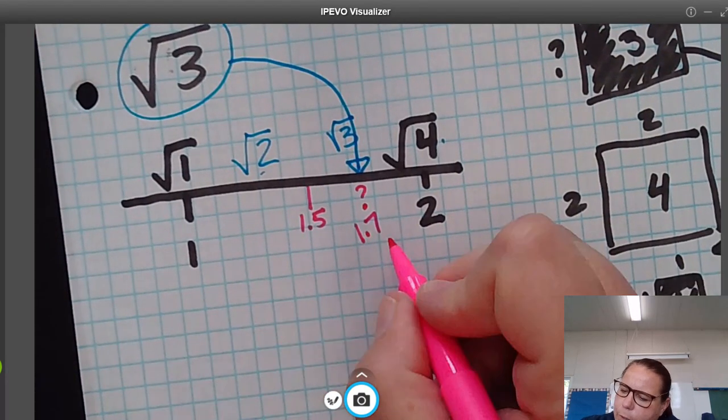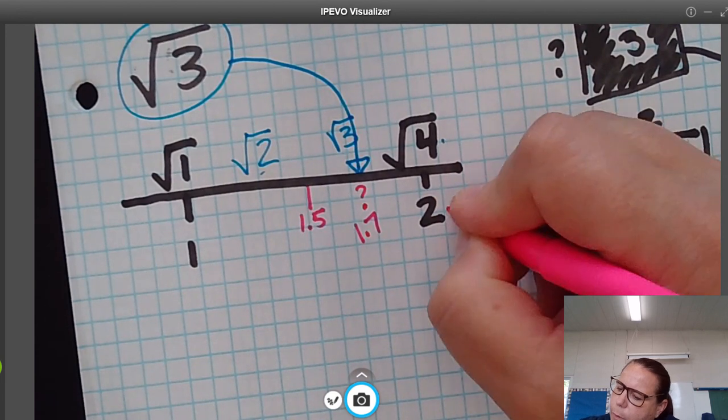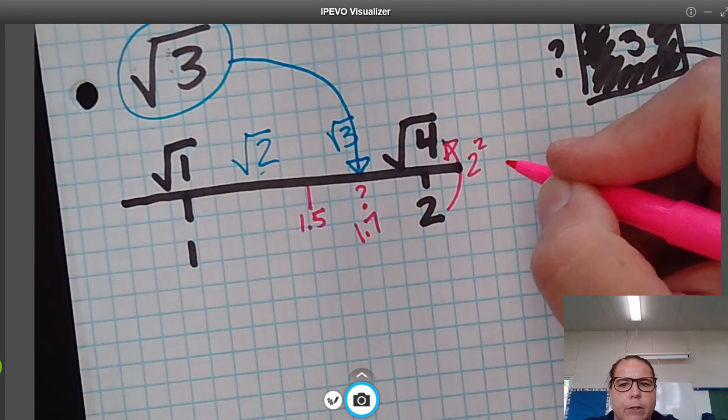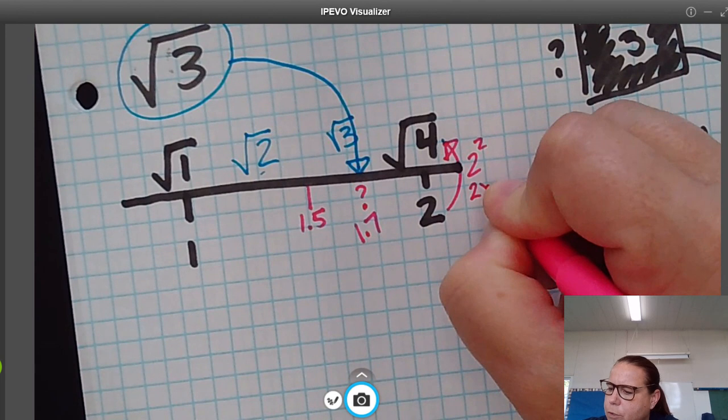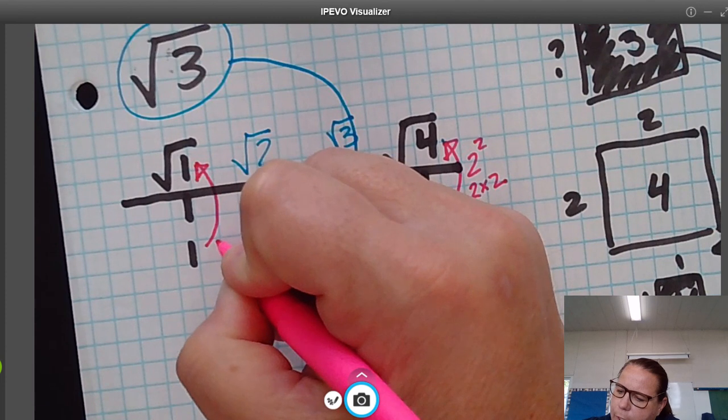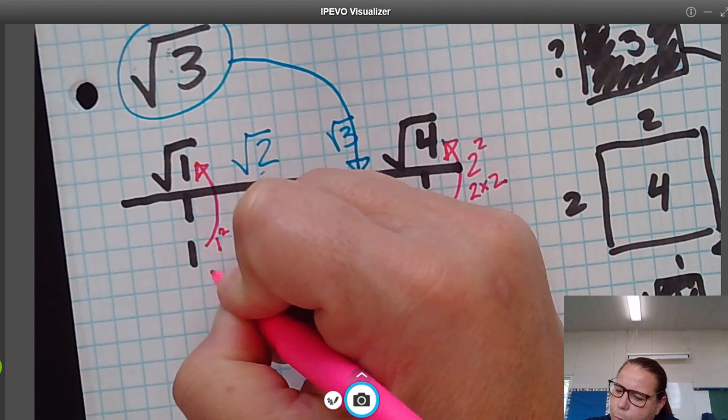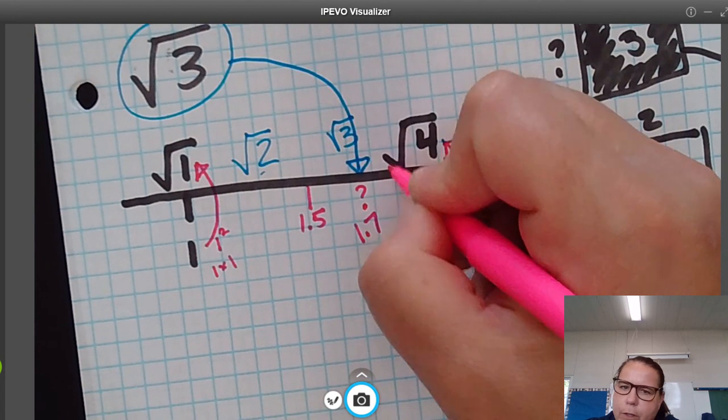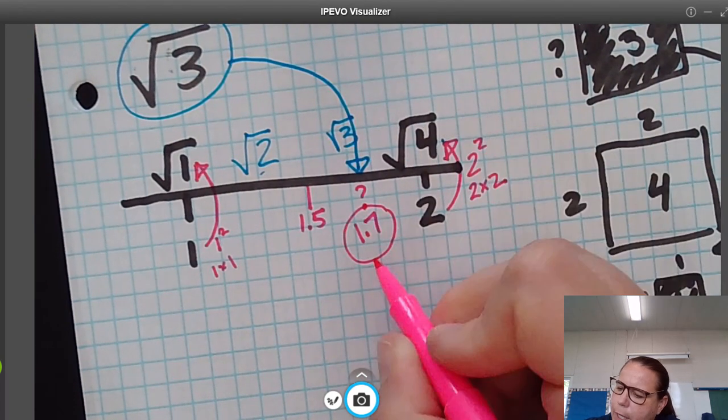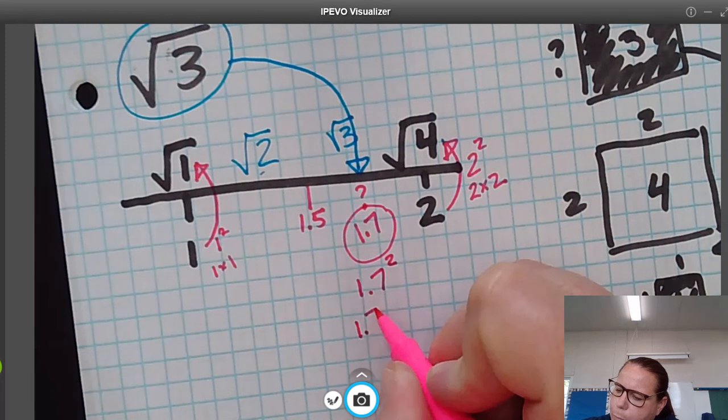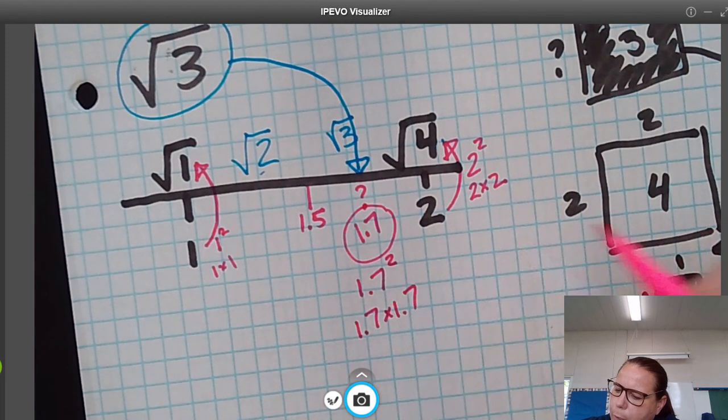When you test that, just like we took 2 to get that, we said 2 squared, which is the same thing as 2 times 2. To find this, it is 1 squared, which is 1 times 1. So to test for the square root of 3, if this is what we're going to test, we need to think 1.7 squared, which is the same as 1.7 times 1.7.